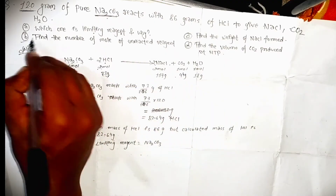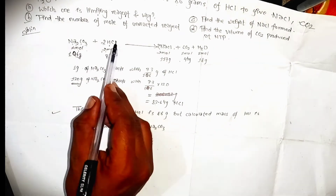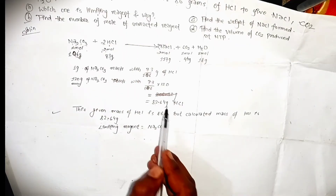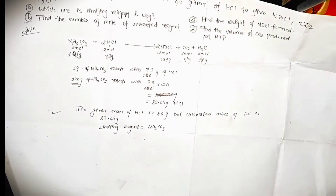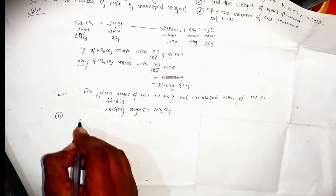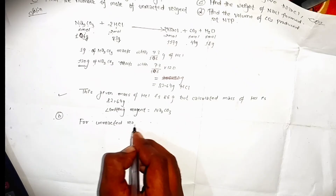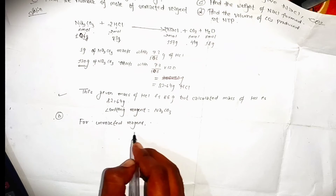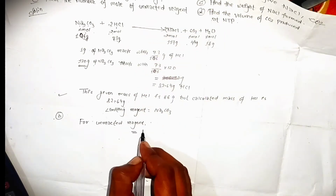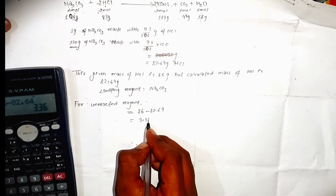The second part: find the number of moles of unreacted reagent Na₂CO₃. How much was consumed? 82.64 grams of HCl reacted; 86 grams were present, so 82 grams reacted. Now we need to find the number of moles of unreacted reagent. The initial is 82.64 and the final unreacted amount is 3.36 grams. Total unreacted is 3.36 grams.